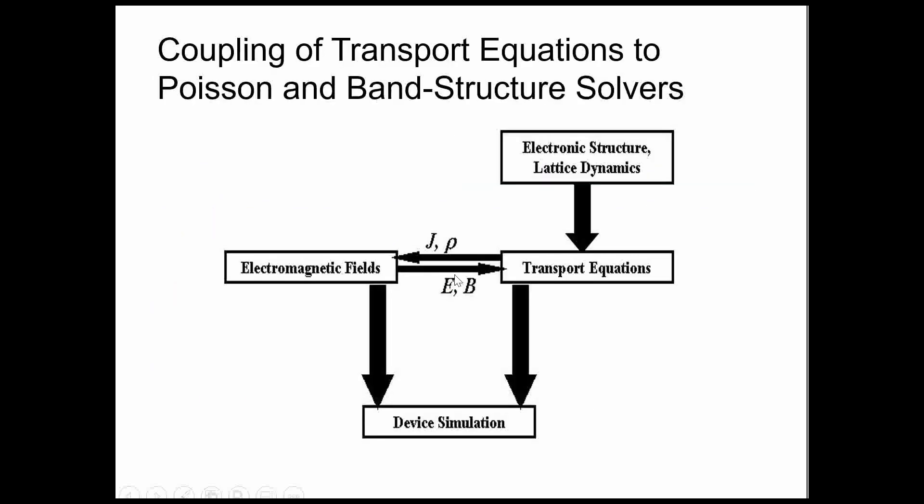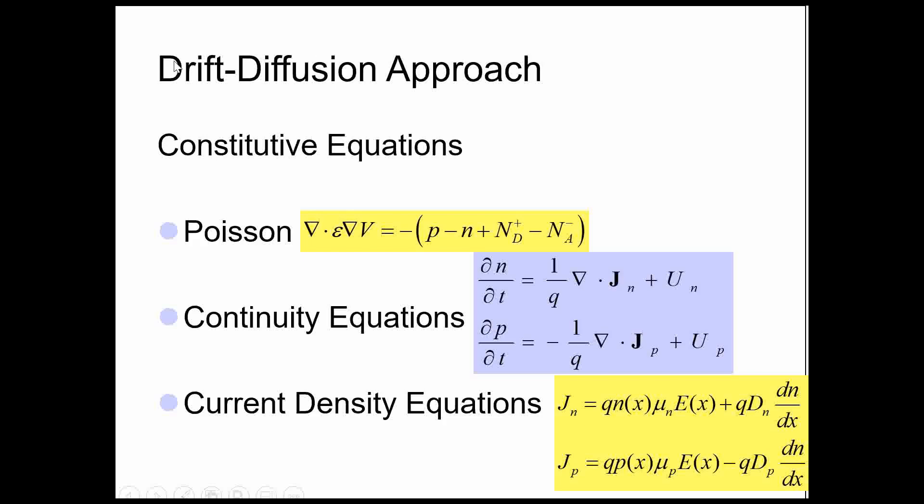What is actually happening here, coupling of transport equation to Poisson and band structure solver. We have lattice dynamics providing band structure, and thereby our transport is happening under external stimulation of illumination in solar cells or biasing in diodes and MOSFETs. Those transport equations are taken care of by electromagnetic fields, and then overall device simulations we are achieving. Like other phenomena we are taking into picture like for solar cell illumination and interfacial recombination and quantum phenomena.